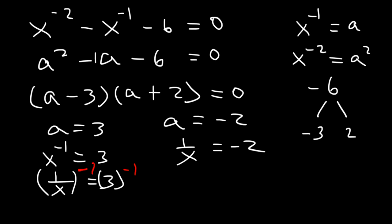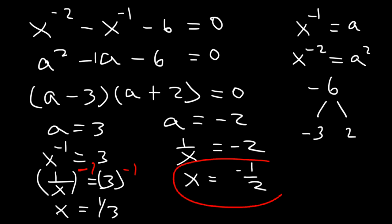When you raise 1 over x to the negative 1, the fraction flips and it becomes x. 3 to the negative 1 is 1 third. And if 1 over x is negative 2, then x is going to be negative 1 over 2. So we have two answers: negative 1 half and positive 1 over 3.